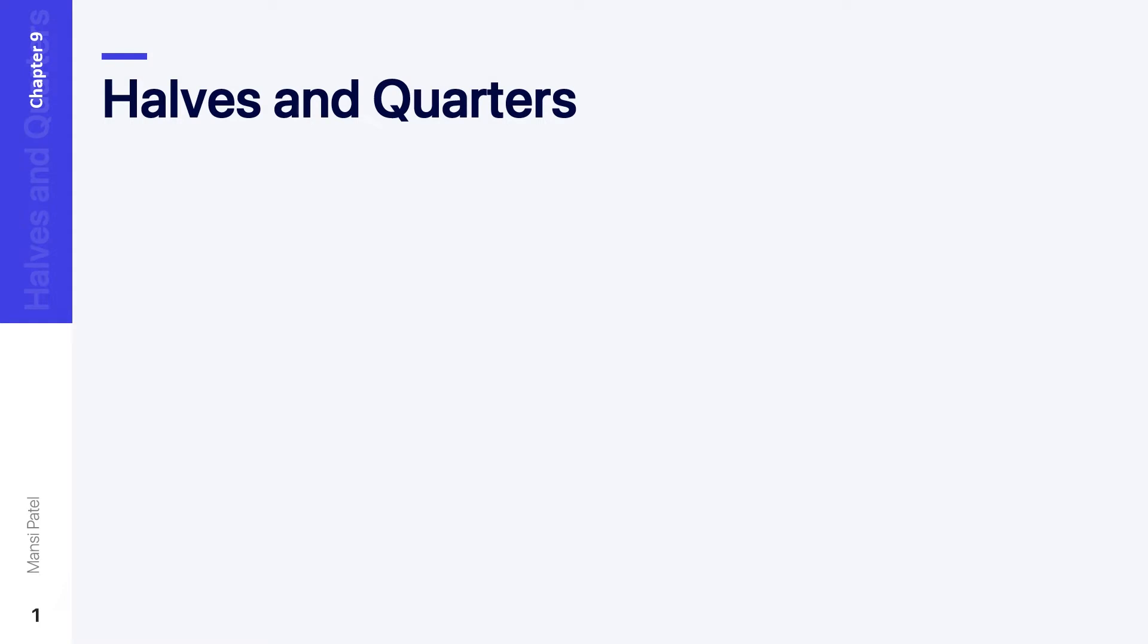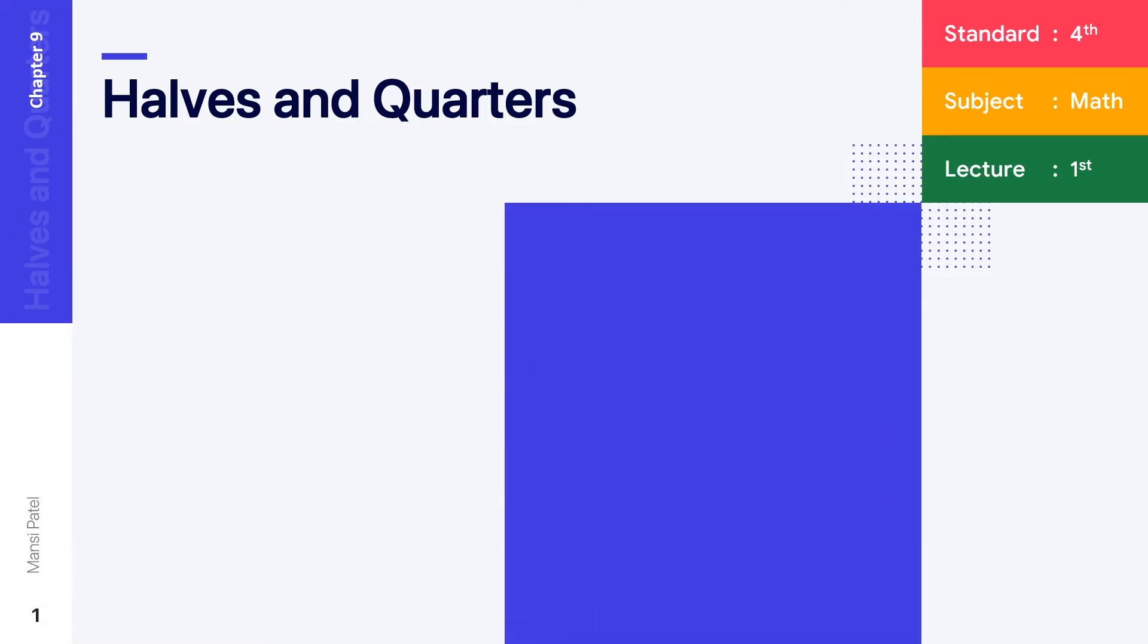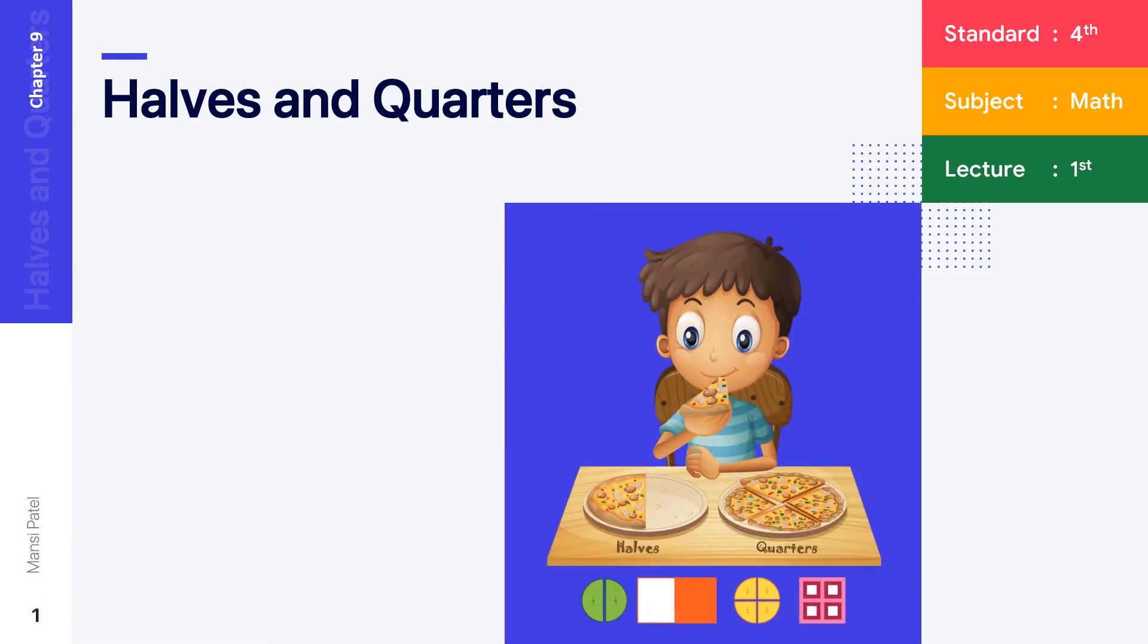The name of chapter number 9 is Halves and Quarters. Now in your mind one question is there: what is the meaning of halves and quarters? Let us see the meaning of halves and quarters through one story. And after that, what is the meaning of half and what is the meaning of half of half? This topic we are going to see and study through one activity.